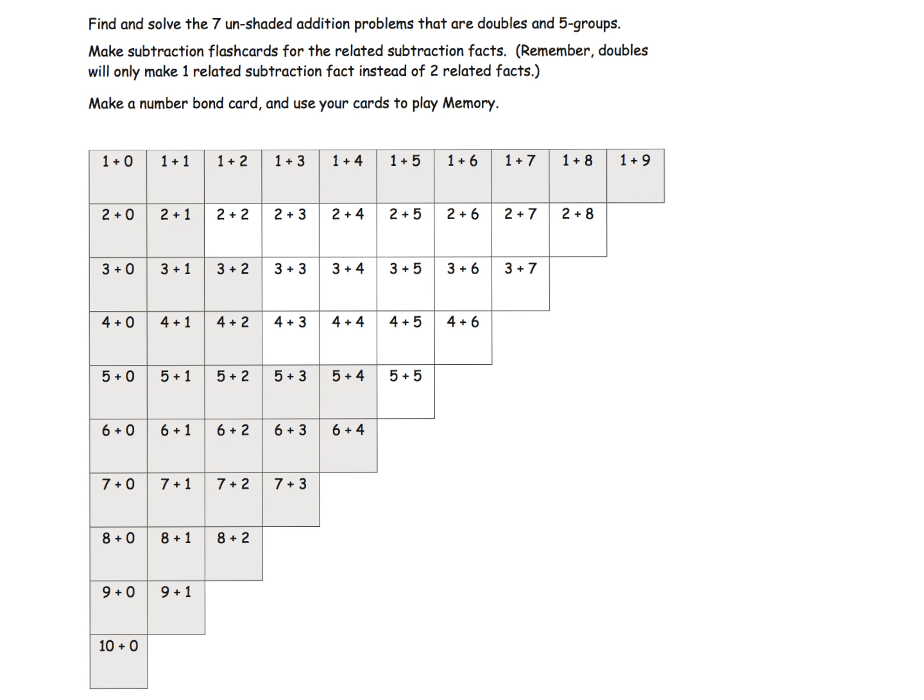Now I chose to show the homework problem simply because it took me, honestly, forever to figure out what they were talking about. And I don't want you to have to feel frustration, parents and teachers, over what they are talking about. So the directions say find and solve the 7 unshaded addition problems that are, now here's the key, doubles and 5 groups. So we're going to be looking at these unshaded problems down here and we need to figure out which ones are the doubles and the 5 groups, and we're told that there's 7 of them.